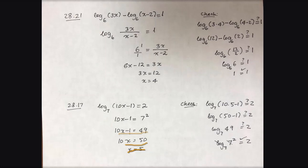Just make sure the number you get is in the domain of your function. So when you plug it into the original equation, check separately here: logarithmic base 7 of 10 times 5 minus 1, is that equal to 2? So 10 times 5 minus 1 is going to become 49. Log base 7 of 49, yes, it is equal to 2. So it checks.